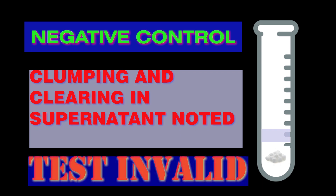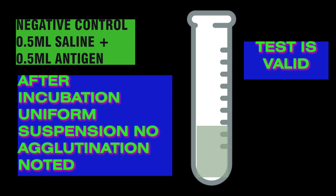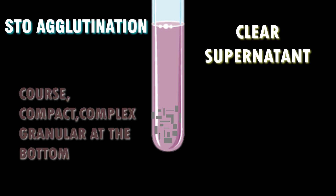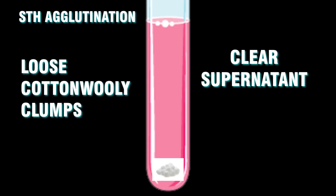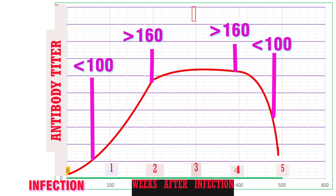How to interpret the test results: Control tubes are checked for agglutination first. If agglutination is present, the test is invalid due to contamination in saline or antigen suspension. There should be no agglutination — only uniform turbidity. Positive O agglutination appears as coarse, compact, granular agglutination with a clear supernatant. H agglutination leads to formation of loose cottonwood clumps. The agglutination titer depends on the stage of the disease. Agglutination usually appears by the end of the first week, so blood taken earlier may give a negative result. The titer increases steadily until the third or fourth week, after which it declines.